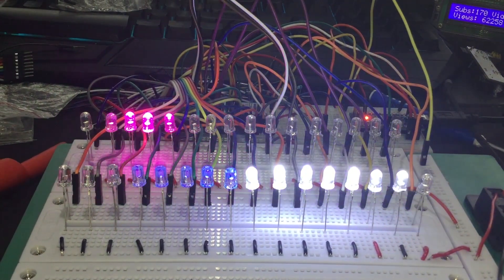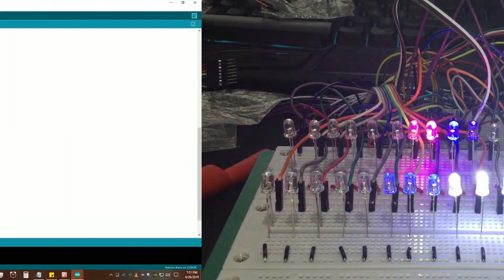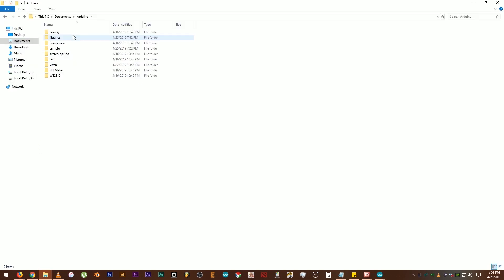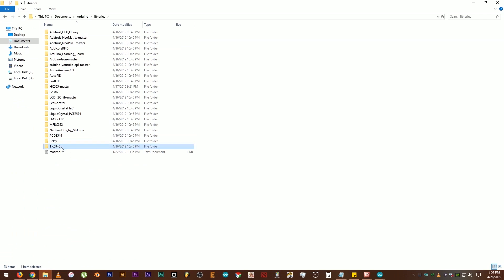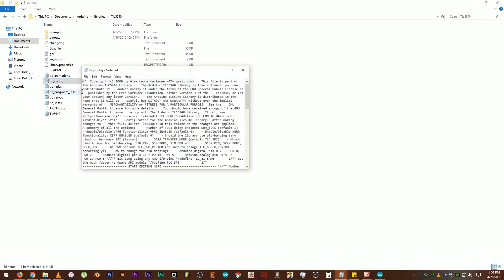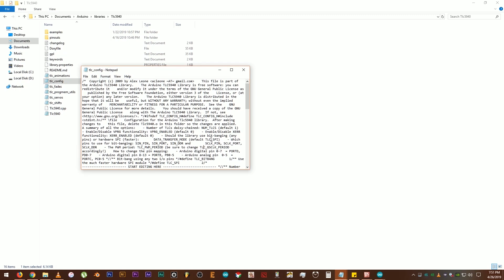Let's go to the library folder. Okay, so according to this comment on the sample code, we need to change the number of ICs that we are going to use on the config file inside the library folder. Let's go to the library folder. Let's open up the file and look for num underscore tlc to set up our ICs. What, where is it?